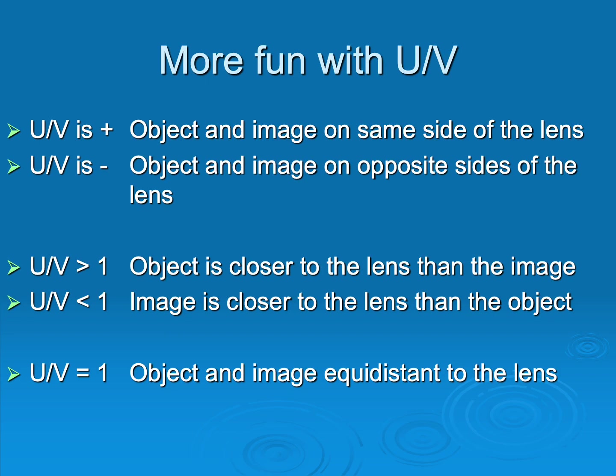When U over V is positive, not only is the image upright, but it tells you that the object and the image are on the same side of the lens. When U over V is negative, they're on opposite sides. When you get magnification, the object is closer than the image to the lens, and reverse for minification. If they are the same distance from the lens, you get U over V of 1 — no magnification.